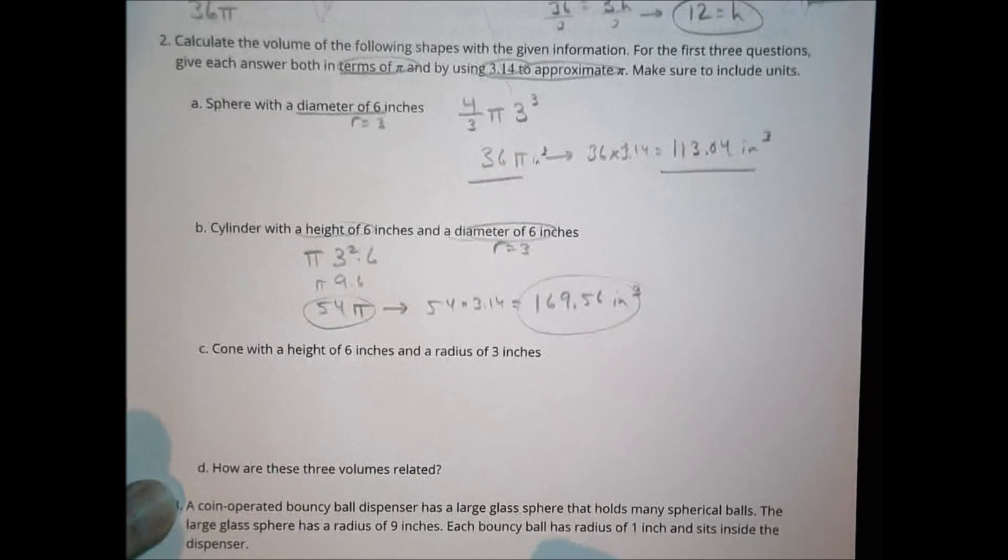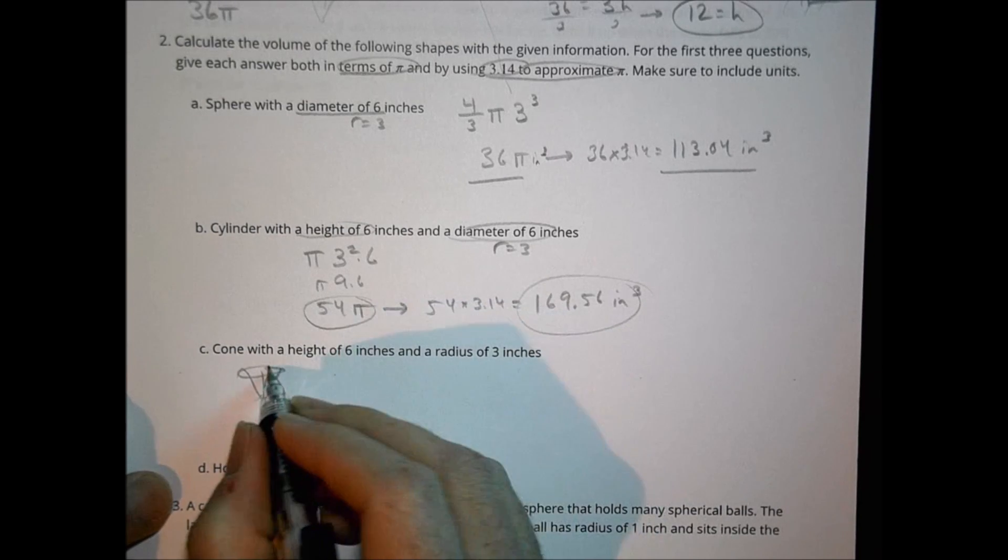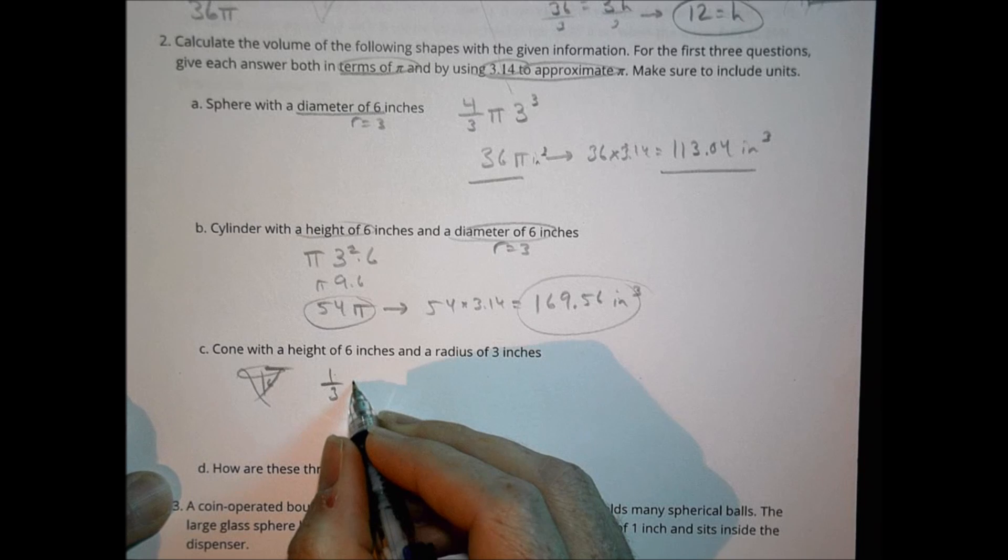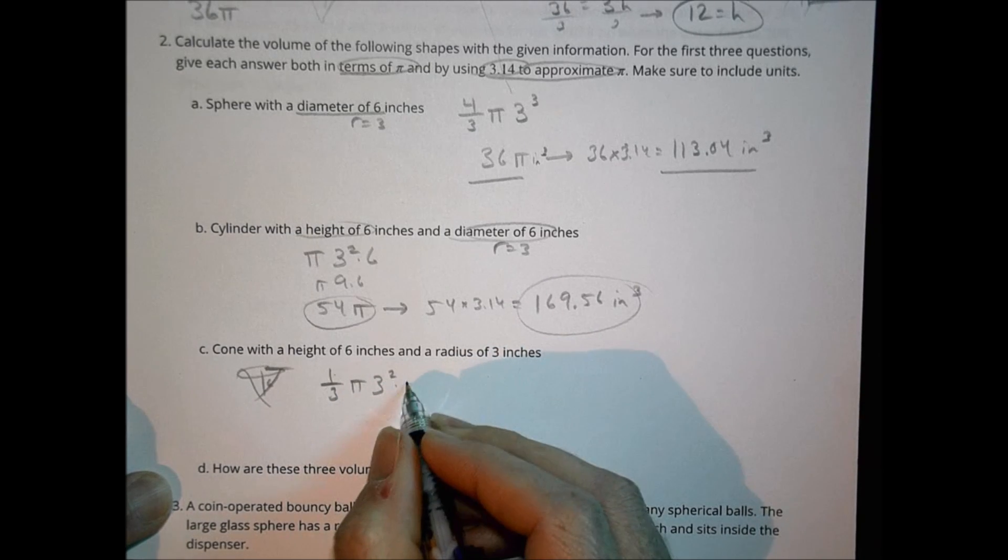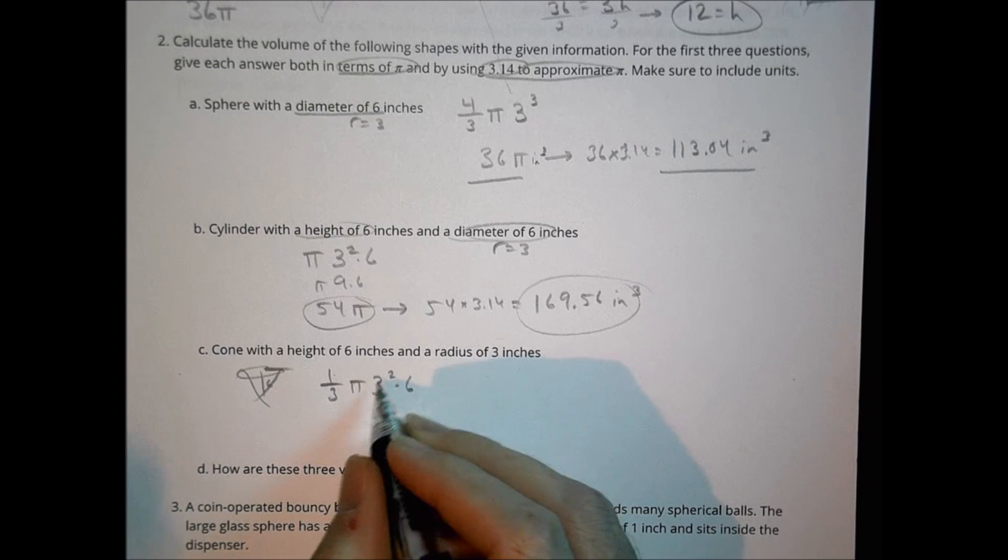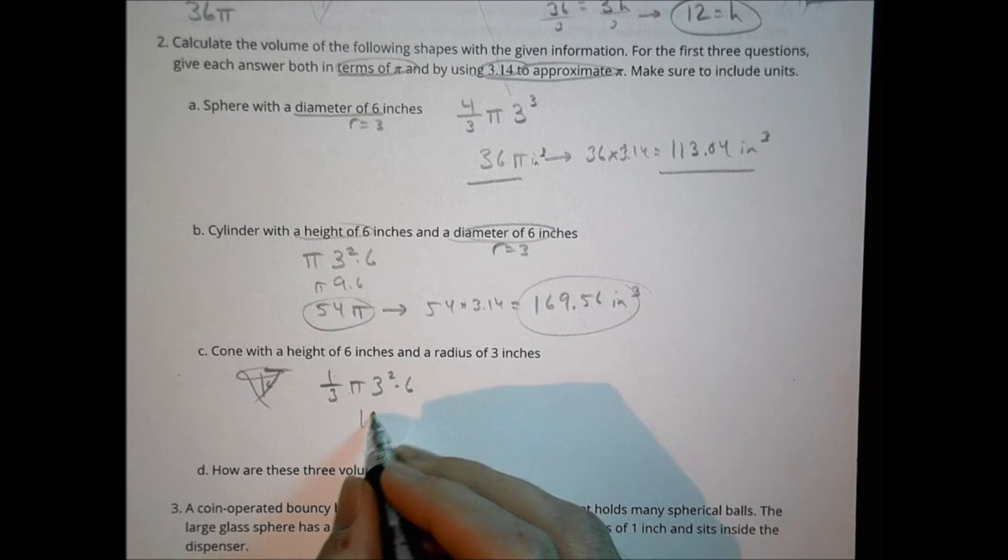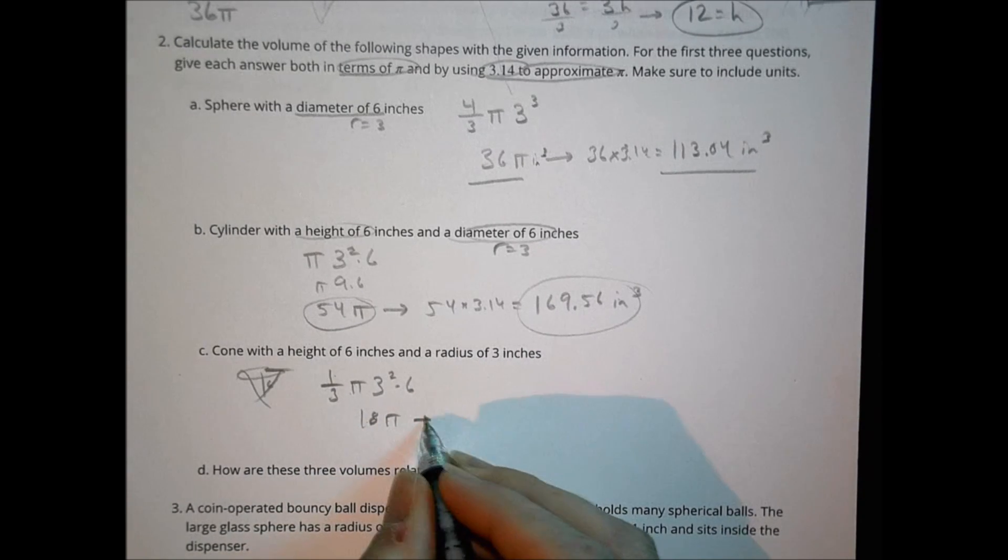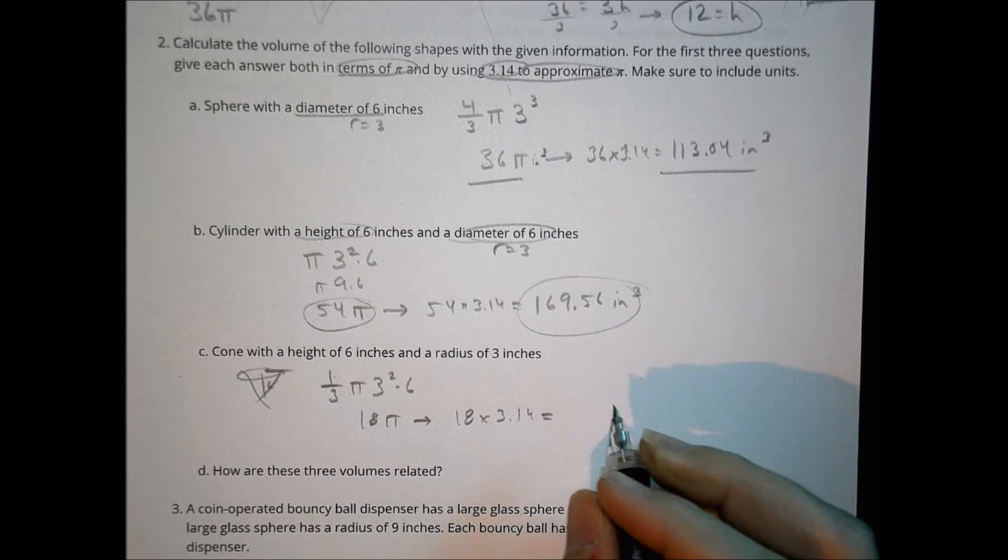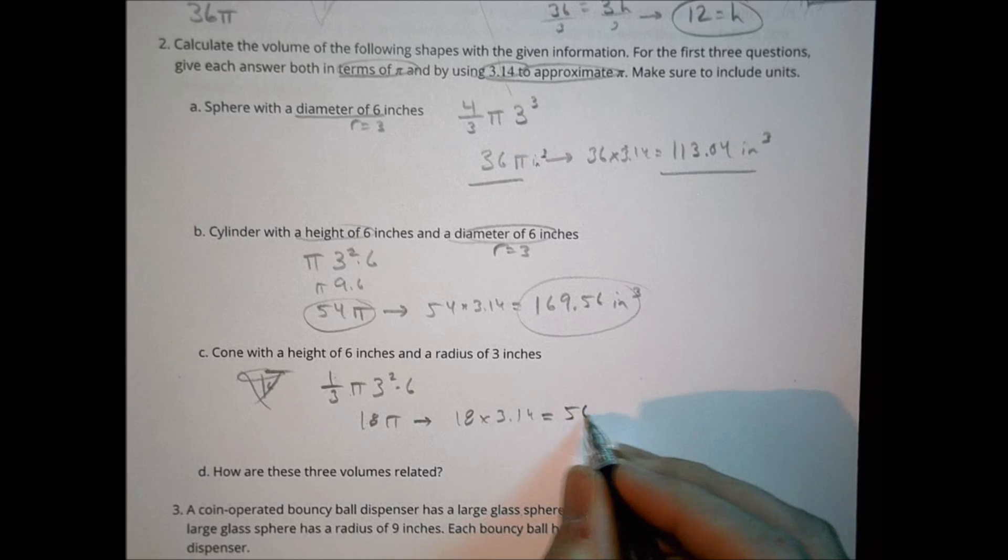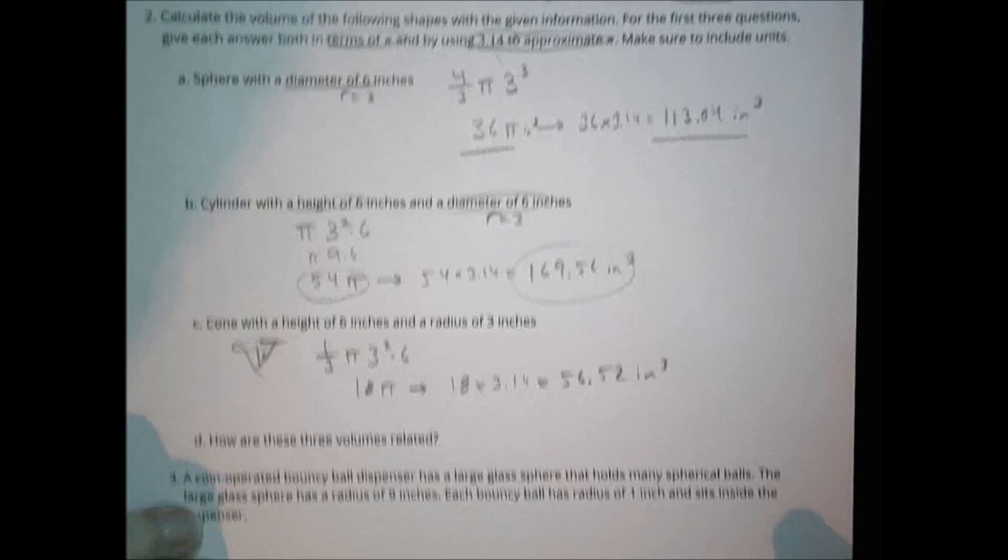And then finally here, the next one, we have a cone, with a height of six and a radius of three. So we're going to do one third pi times the radius, three squared times the height. So three squared is nine. Nine divided by three is three. Three times six is 18. So we end up with 18 pi. So 18 times 3.14 for value of pi is equal to 56.52 inches cubed.